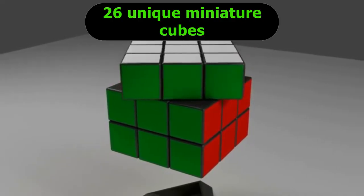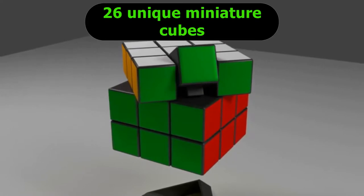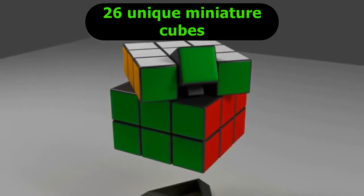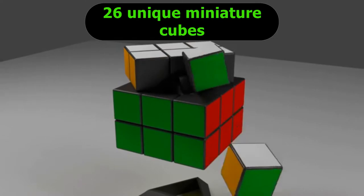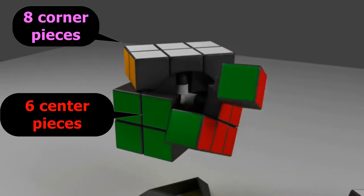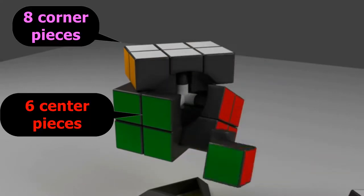The standard cube consists of 26 unique miniature cubes, also called pieces or cubelets, including a center shaft frame, 6 center pieces, 8 corner pieces, and 12 edge pieces.